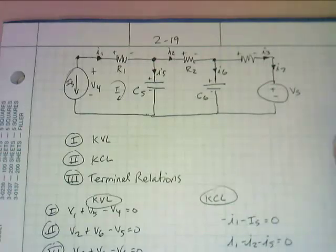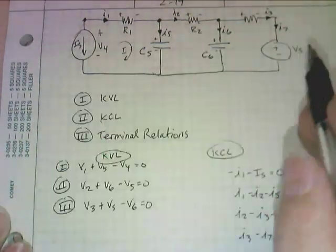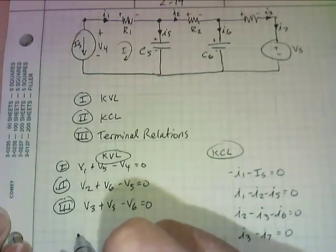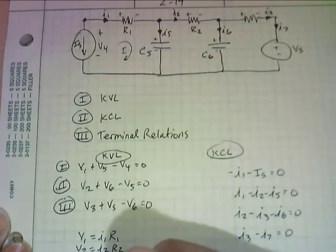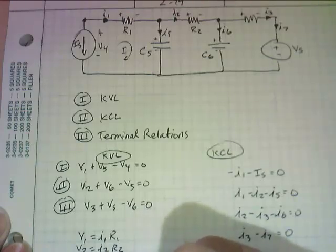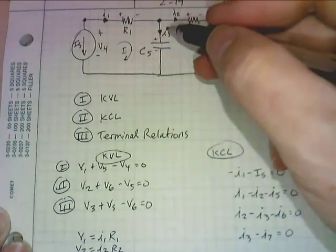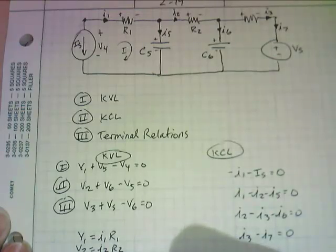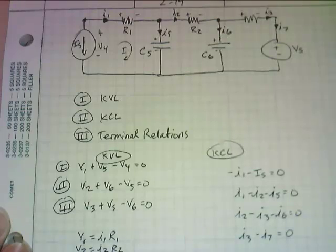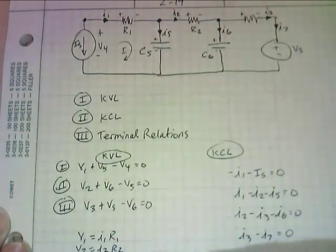Now let's go through the terminal relations. For the resistors: V1 equals I1 R1, V2 equals I2 R2, V3 equals I3 R3. For the capacitors: I5 is going to equal capacitance 5 times dV5/dt, and I6 is going to equal capacitance 6 times dV6/dt.